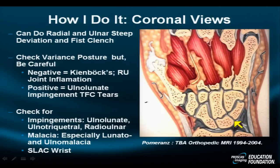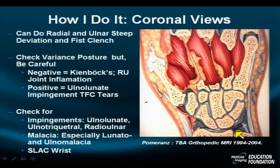Ulnar abutment can separate the lunate from the triquetrum by fracturing or breaking the lunatotriquetral ligament, eventually leading to generalized degeneration of the carpal bones — a progression known as the Palmer degenerative grading system for ulno-lunate abutment and chronic degenerative TFC tears. This is the most common form of impingement, namely ulno-lunate impingement, but we'll also look at ulno-triquetral and radio-ulnar forms.